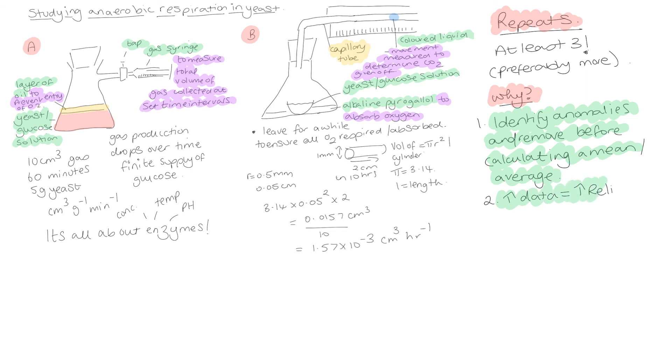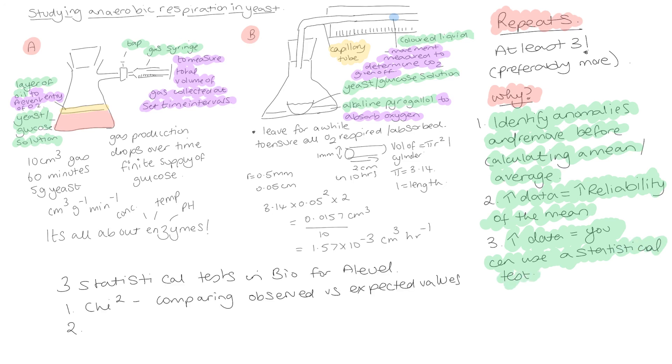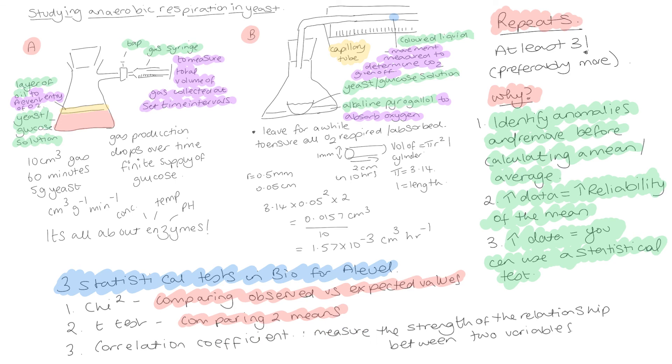Finally, the bigger the data that you have, the more able you are to use a statistical test. And you know that in biology A-level, you need to learn about three statistical tests. Can you remember those statistical tests? Just a quick recap. So there's the chi-square where you're comparing observed and expected values. There's the t-test where you're comparing two means. And there's the correlation coefficient where you are looking at the strength of correlation between two variables.